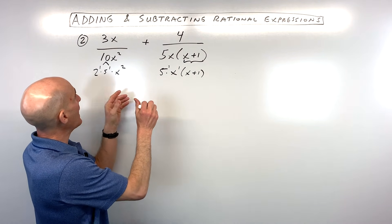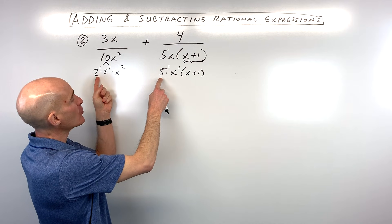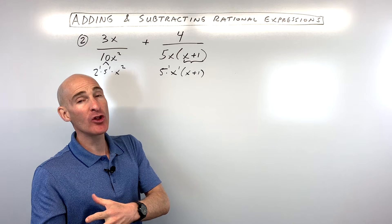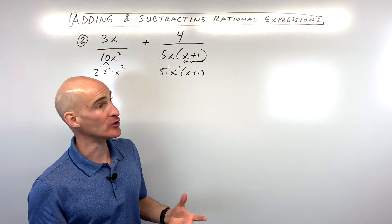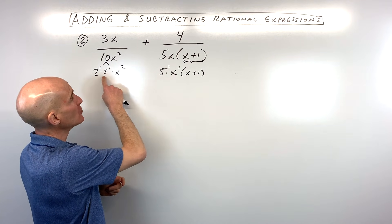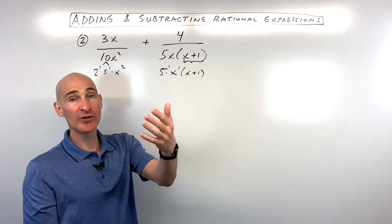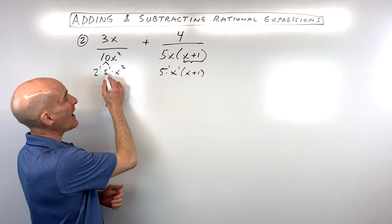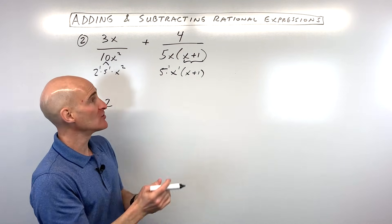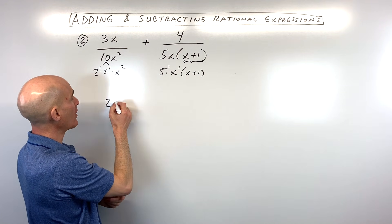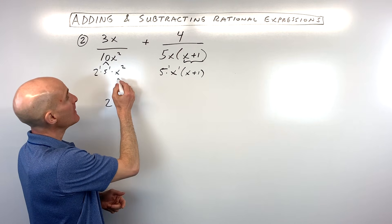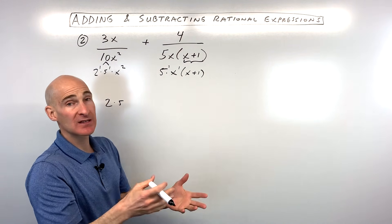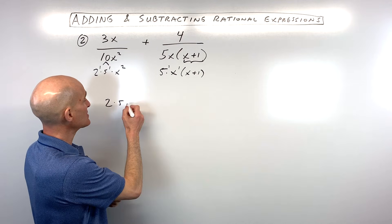When finding the common denominator, you want to find the least common multiple — meaning you take each factor the maximum number of times it appears. There's one two in the first denominator and no twos in the second, so we need one two. For fives, it's a tie at one each, so we just need one five. For x, we have x squared (two x's) versus one x, so we take x squared.